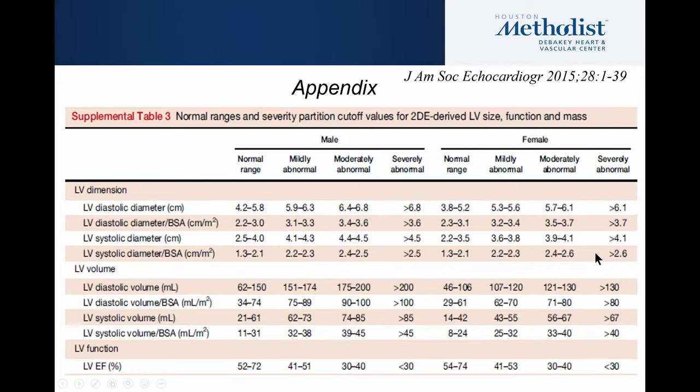These are normal values which are important to have in your lab. Again, there are values for males and females showing normal, mildly abnormal, moderate, or severely abnormal ranges for the end-diastolic dimension and LV volumes.